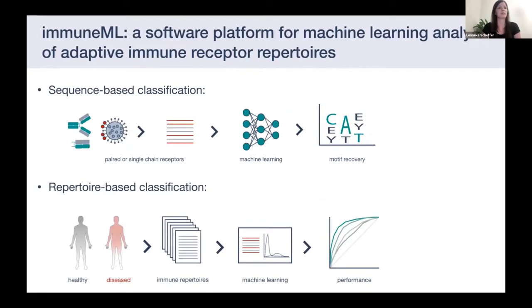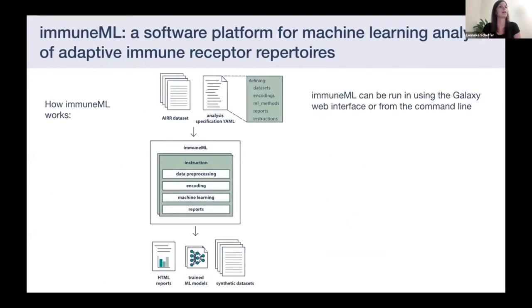ImmuneML can help us answer two types of questions: sequence-based classification, which is typically antigen binding prediction, and repertoire-based classification, where we typically want to predict the immune status of an individual. As input, ImmuneML takes an AIR data set and an analysis specification, where we define the data sets to use, how to represent the data, machine learning models to try out, and other details. After the analysis is performed, we typically get HTML reports and trained machine learning models as output.